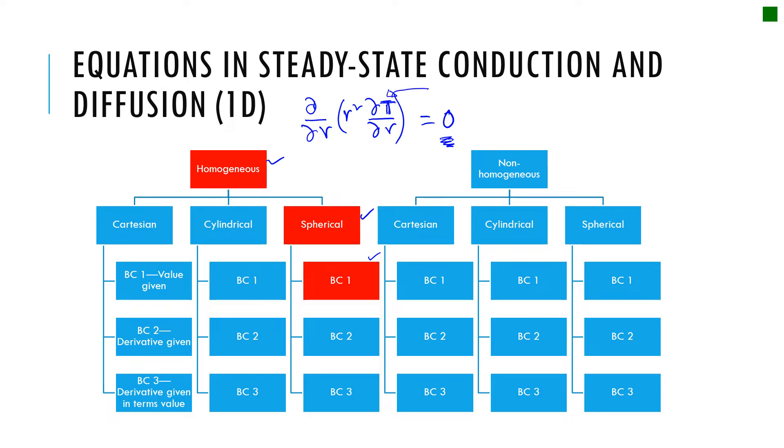So T is my dependent variable and R is my independent variable. This equation appears in steady-state heat conduction and mass diffusion as you will see in the heat transfer or mass transfer class.